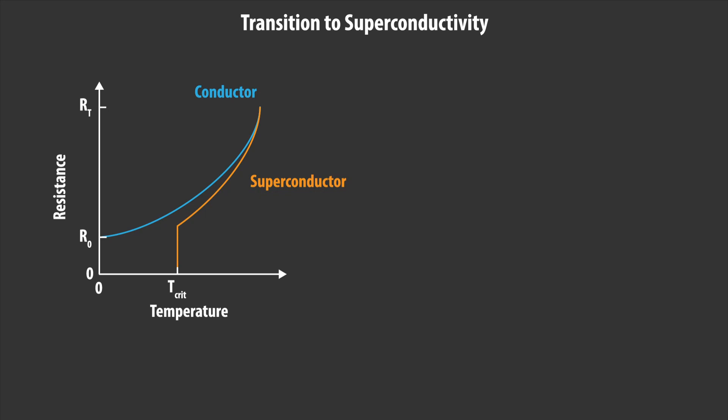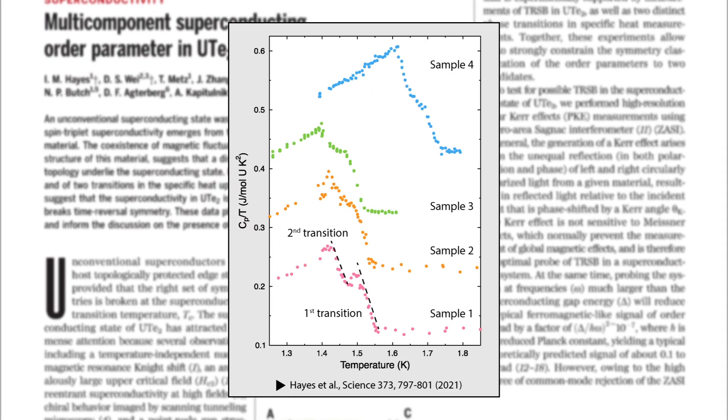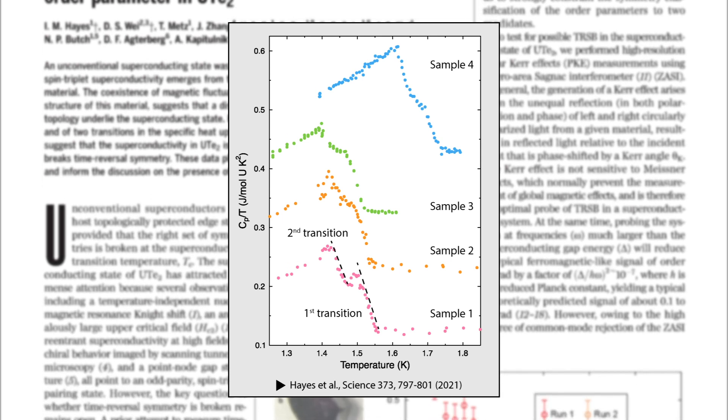Specific heat is the amount of heat that must be added to one unit of mass of the substance in order to cause an increase of one unit in temperature. When a substance becomes superconducting, we see that there's an increase in the specific heat. That is, it requires more energy to heat the sample as some energy has to be used to transition from the superconducting state to the regular state. When the system continues to cool down further, we should see an exponential decay that leads to a lower specific heat than if the material was a metal. Here the scientists observed two distinct rises in specific heat, indicating two separate superconducting transitions.